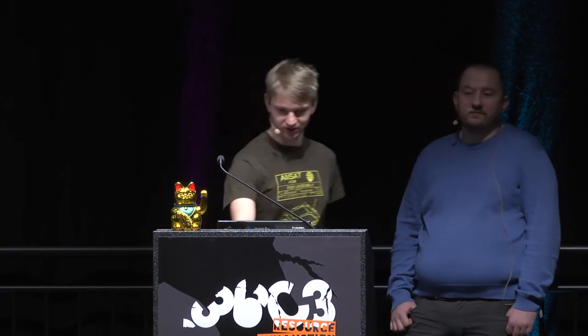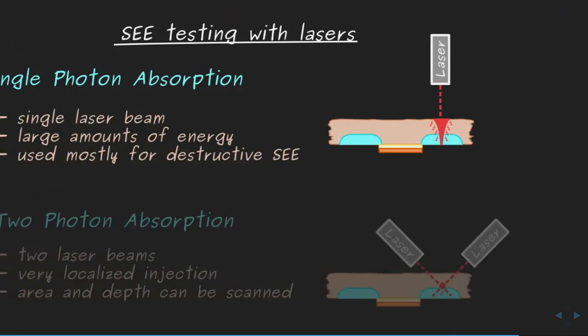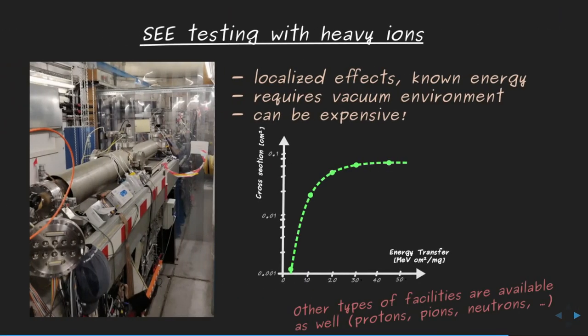Q: Have you tried using steered ion beams for more localized radiation testing? A: Yes. The facility shown is actually in Darmstadt, Germany — a microbeam facility capable of steering a heavy ion beam to a single position with sub-micrometer accuracy. It is probably the only such facility in Europe.